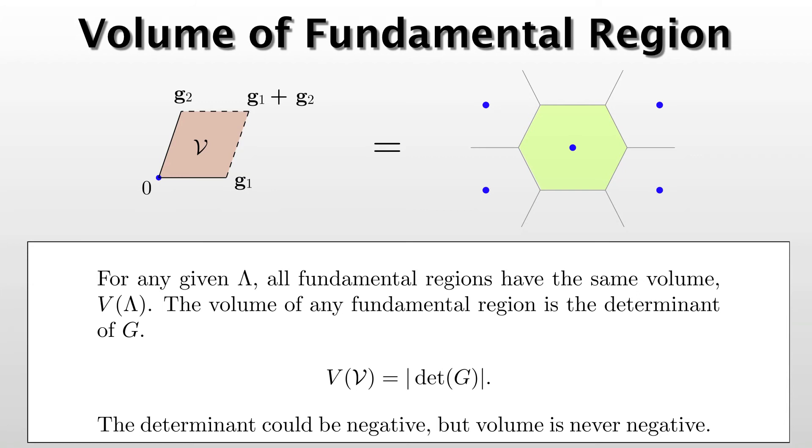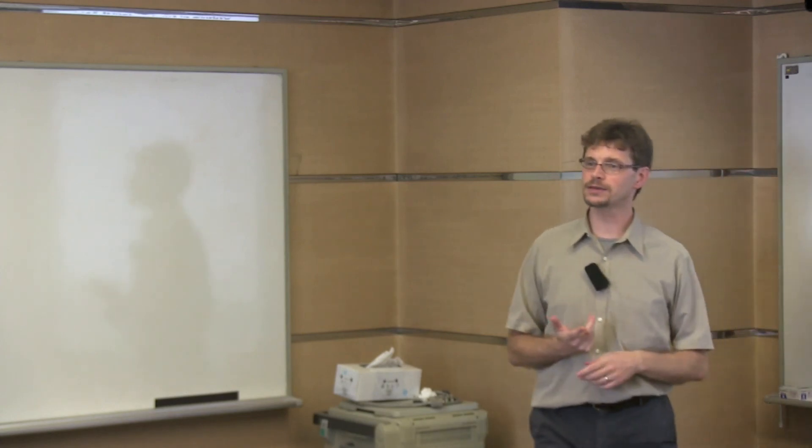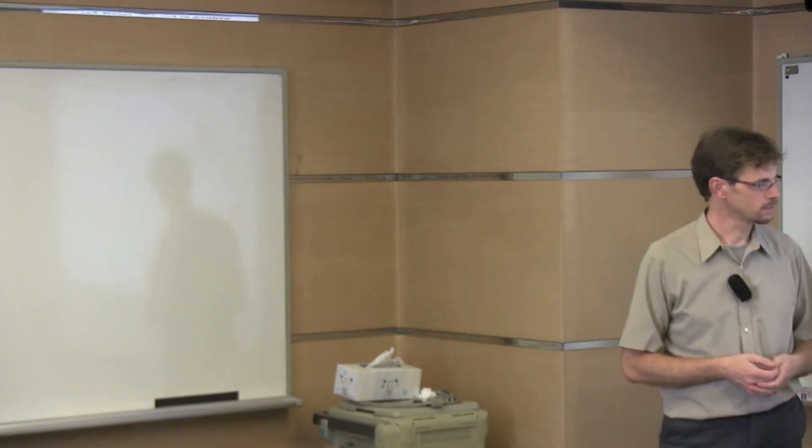And we denote that V of lambda. And the volume is equal to the absolute value of the determinant of the generator. This is really great because it gives us an easy way to compute the volume of the fundamental region. So of course the determinant could be negative, but the volume is never negative.